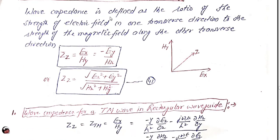Wave impedance is defined as the ratio of the strength of the electric field in one transverse direction to the strength of the magnetic field along the other transverse direction. So if we see, this is the direction of Ex and this is the direction of the magnetic field, then the wave impedance can be defined as the ratio Ex over Hy.